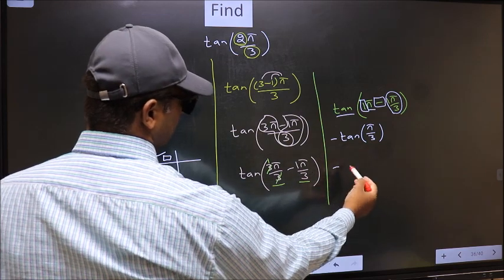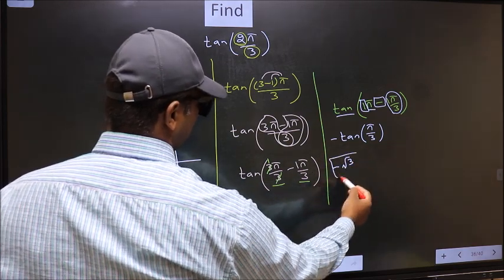So, negative tan π/3 is root 3. This is our answer.